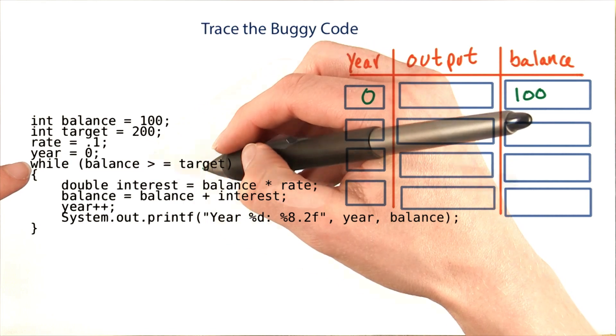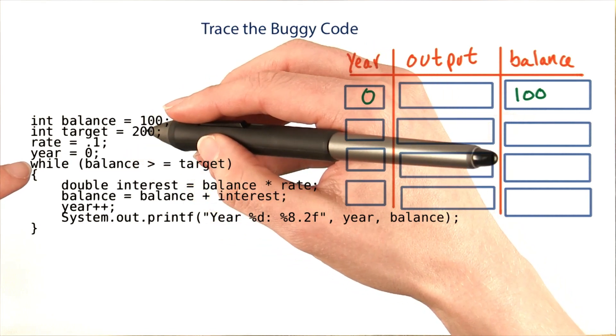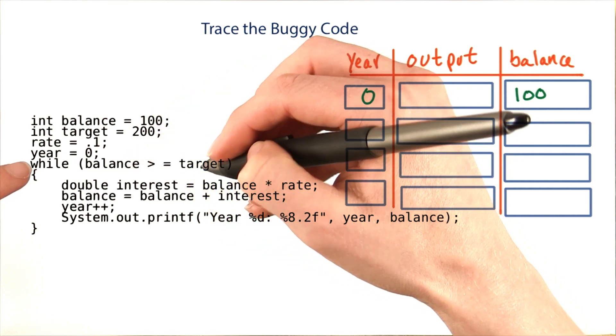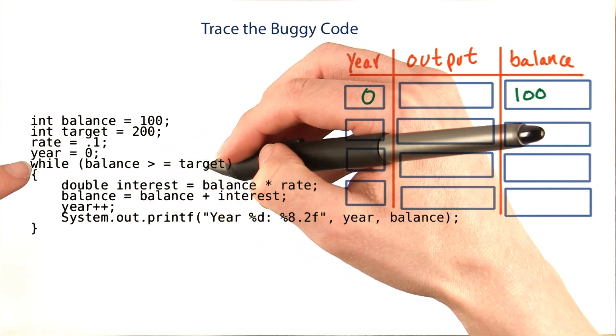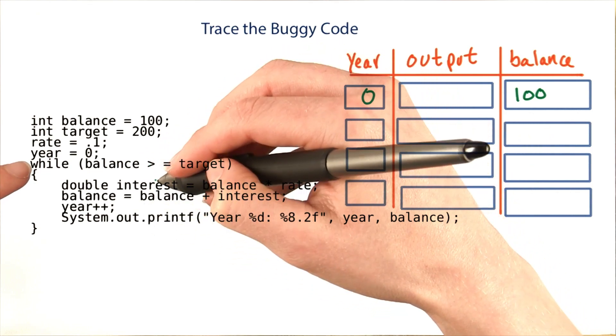Now we compare the balance to the target. Balance is 100 and the target is 200. 100 is not greater than or equal to 200, so we don't go into the body of the loop.